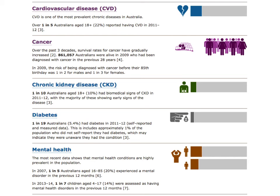These diseases are quite common in our society and are most likely to cause the most disruption to the healthcare system. Cardiovascular disease affects one in five Australians. Cancer affects one in two males and one in three females aged 85 years and over. Chronic kidney disease affects one in ten Australians aged 18 and over. Diabetes affects one in nineteen Australians. Mental health conditions affect one in five Australians aged 16 to 85, and one in seven children.